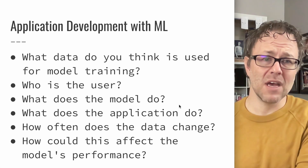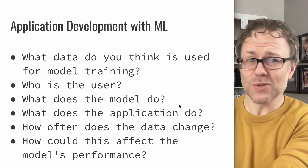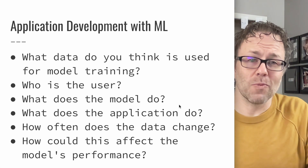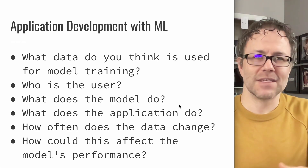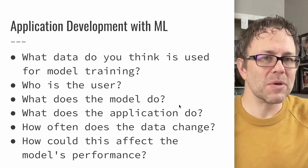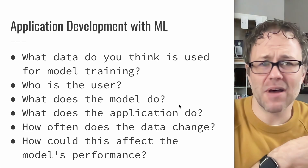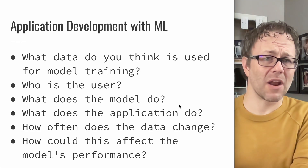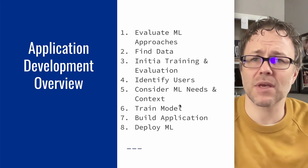Maybe the application retrieves other data too — you don't always want to give your model only direct user inputs. Sometimes one action a user takes provides an input for the model, but that input is enhanced with other records or data to provide a better prediction. So what's the API to your prediction service versus the API to your application, and are those the same thing? These are all important considerations when building machine learning-driven applications.